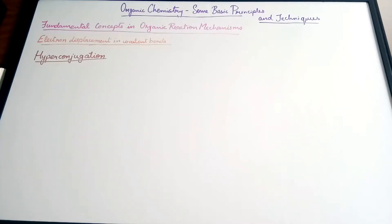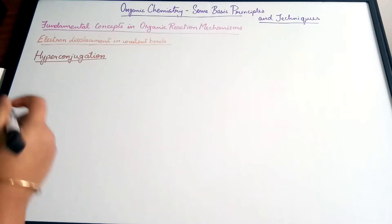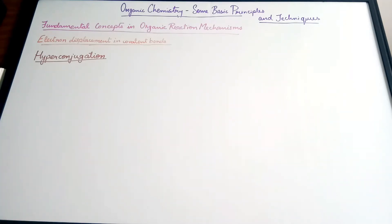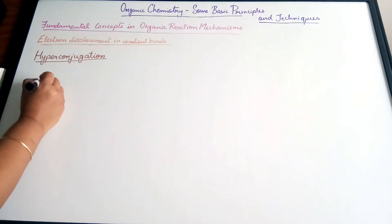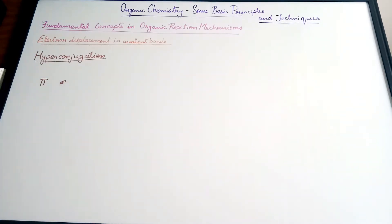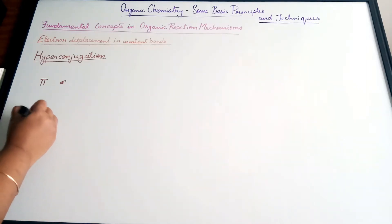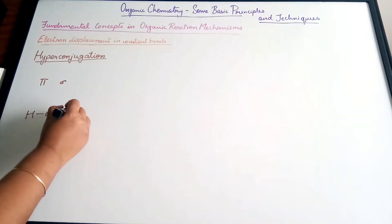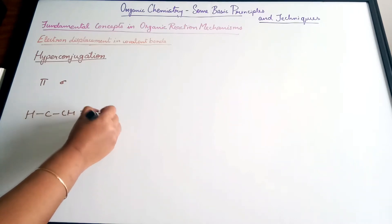In the previous video we learned about resonance effect. In this video we are going to be talking about hyperconjugation. Hyperconjugation is basically the interaction of electrons of the pi system and the adjacent sigma bond of the substituent groups. The electrons of the C-H single bond will basically move towards the multiple bond.